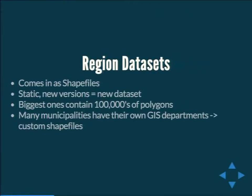Region datasets come in as shapefiles. The biggest are national zip codes and census blocks with hundreds of thousands of polygons. Many municipalities have their own GIS departments with police districts and other custom shapefiles. Every time an election happens, boundaries might move, so we deal with versioning of these datasets.